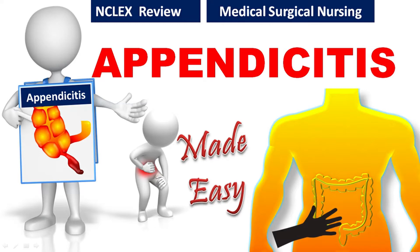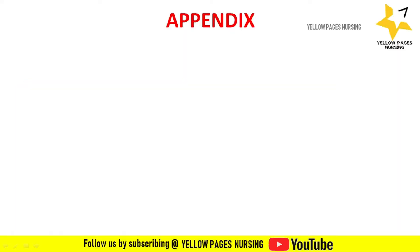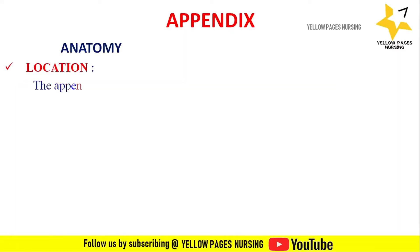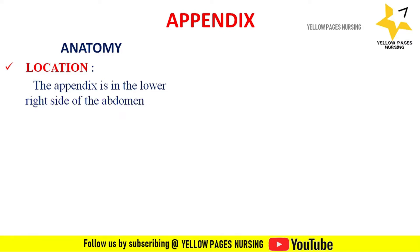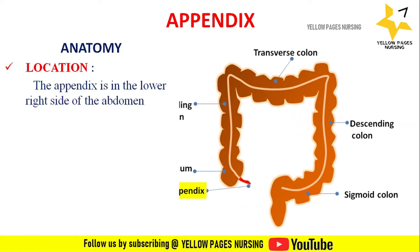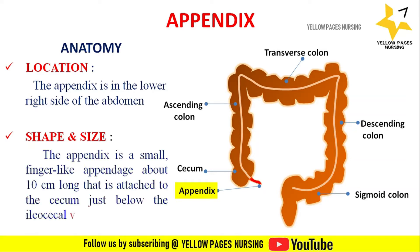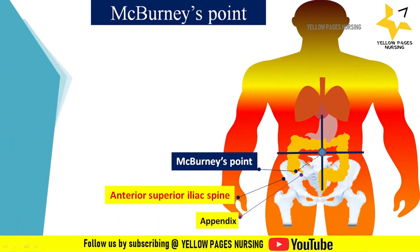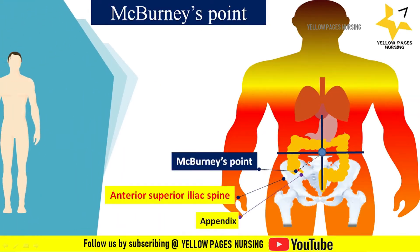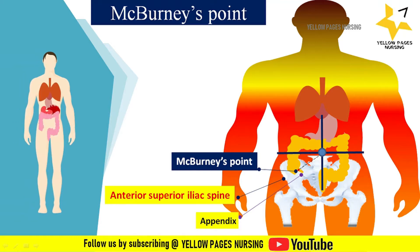Let's have a look at the anatomy of the appendix. The appendix is located in the lower right side of the abdomen. The large intestine has four sections: ascending colon, transverse colon, descending colon, and sigmoid colon. The appendix is a small finger-like appendage about 10 centimeters long, attached to the cecum just below the ileocecal valve.